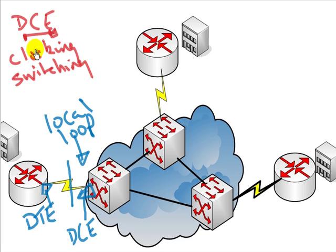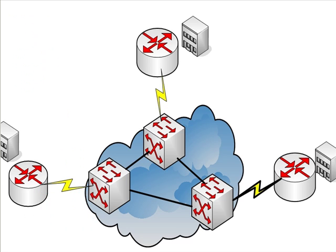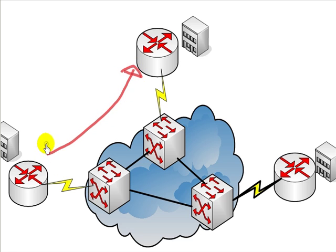The DCEs also provide switching services. We're talking about switching layer two frames here across wide area networks — not the Cisco switches you normally configure for the CCNA. In most cases these are packet switches. What we're concerned with is a connection between your router all the way across the carrier to the other router.